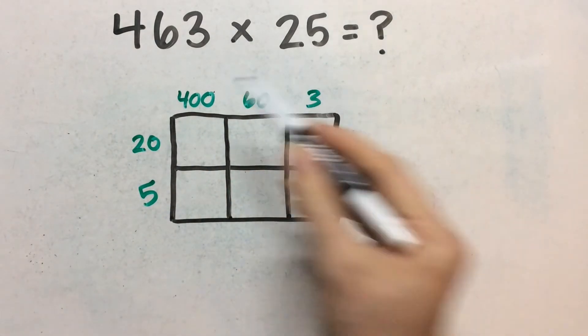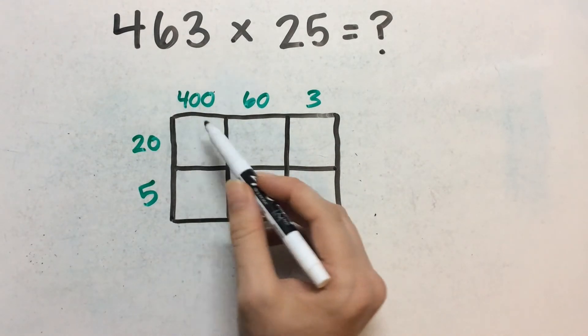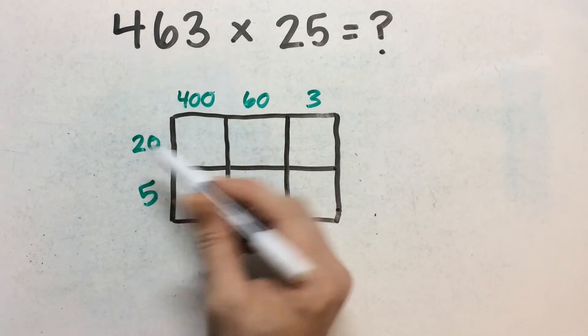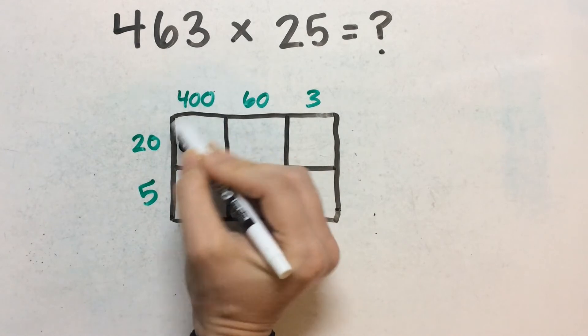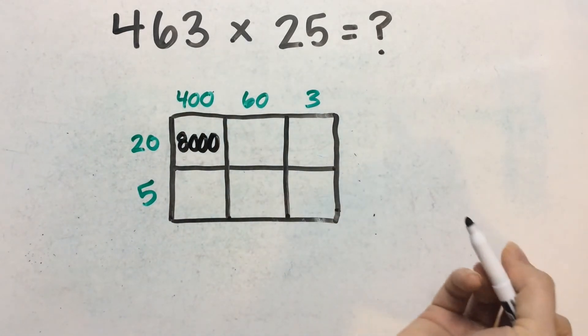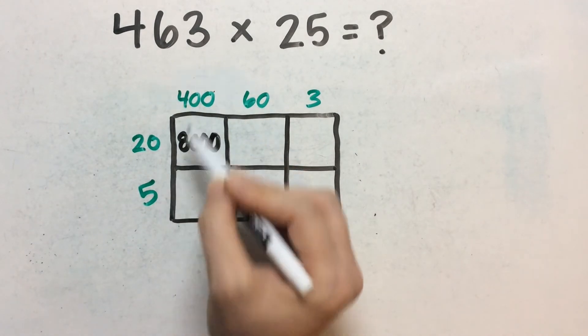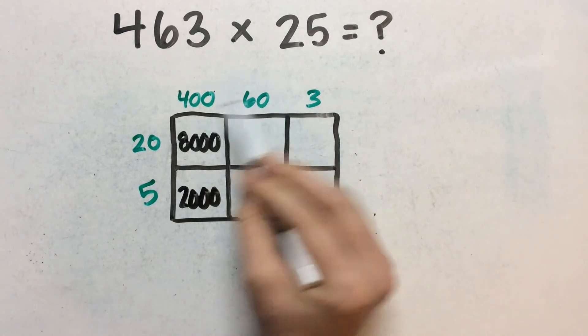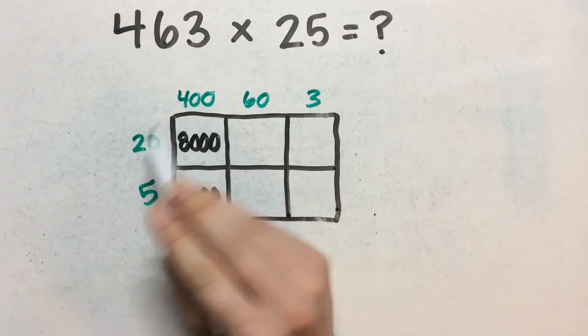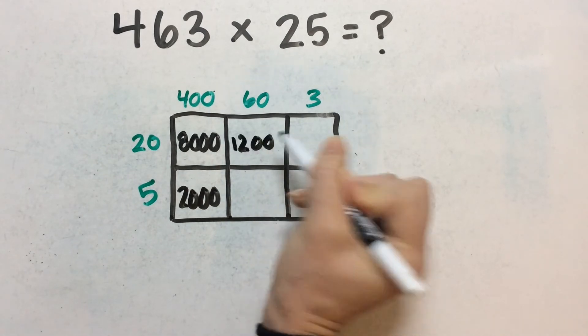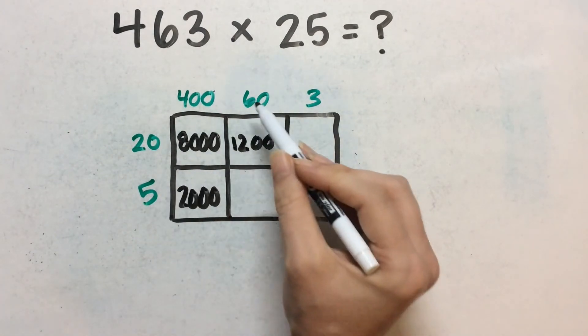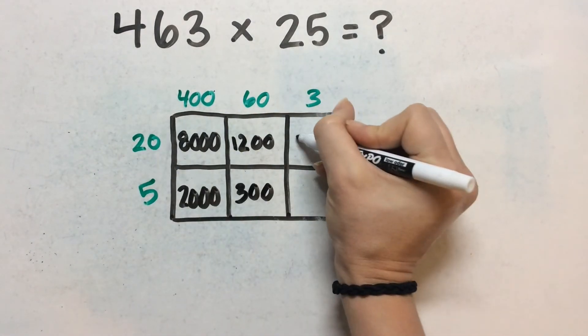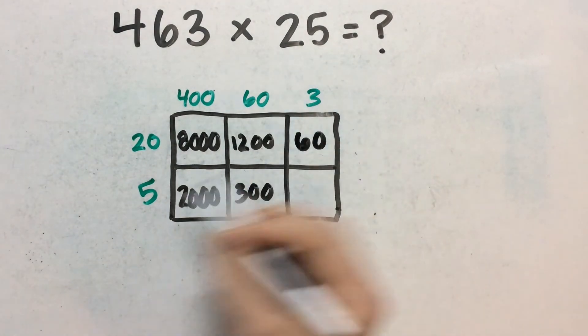And then we multiply for each of these boxes. Like we're finding the area of this box. So 400 times 20, we can just take four times two and get eight and then add three zeros. So we have 8,000 and then four times five and then add the two zeros. So 2,000. 60 times 20, six times two is 12 and then add the two zeros, 1,200. 60 times five, six times five is 30, then add a zero, 300. Three times 20 is 60. And three times five is 15.